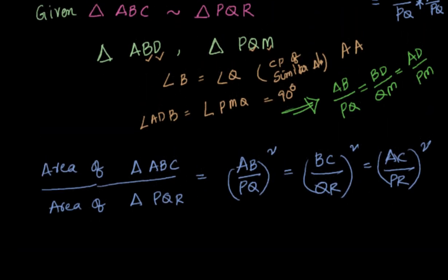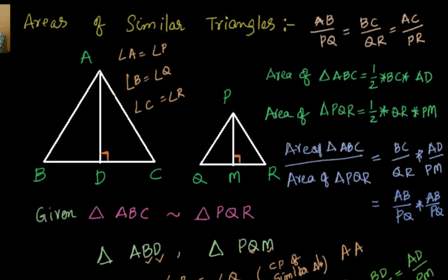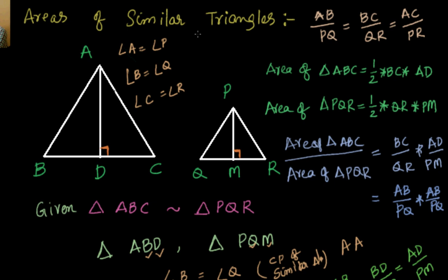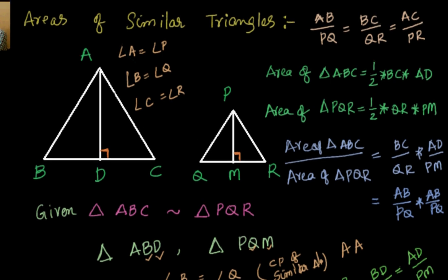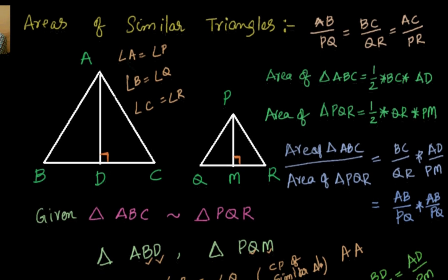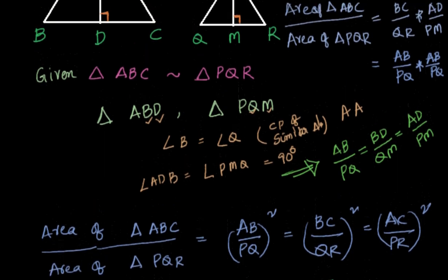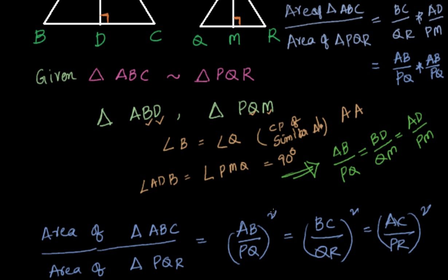One simple example: if we know that two similar triangles have areas in the ratio of 16 to 81, what will be the ratio of their sides? Nothing but the square root of 16 to the square root of 81, that is 4 to 9. So now we have found that the areas of similar triangles are equal to the ratio of the squares of the sides of the triangles — that means area of triangle ABC by area of triangle PQR equals AB by PQ whole square, equals BC by QR whole square, equals AC by PR whole square.